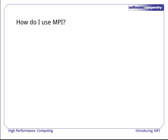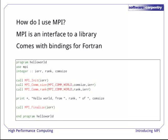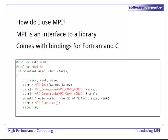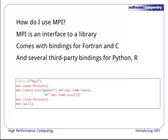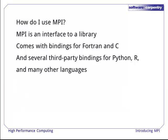Now that we know what MPI is and isn't, how would we go about using it? MPI is an interface to a library, so it consists of function calls and constants that can be used with many programming languages. It comes with bindings — native ways to access these functions and constants — for Fortran and for C. There are many third parties who have built very useful bindings for other languages too, such as Python, R, and most other languages that scientists and engineers use.